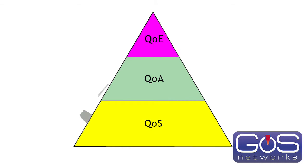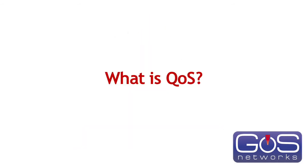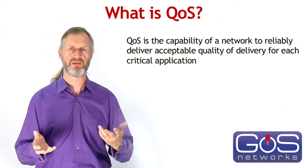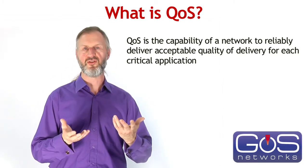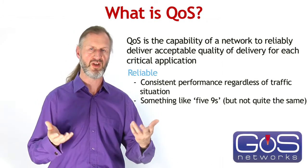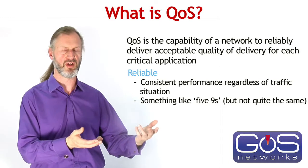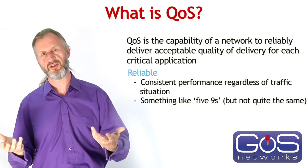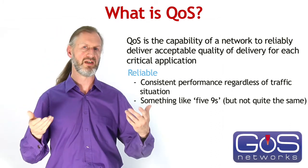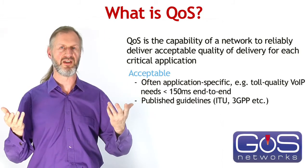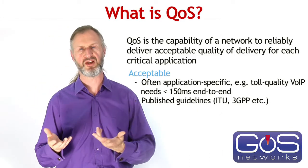So we could say quality of service supports quality of application, which supports in turn quality of experience, which is really the goal. Quality of service is the capability of a network to reliably deliver acceptable performance for each application. The problem is that we have multiple applications all using the network at the same time. Unlike the application layer where we can engineer each one separately, for the network we have to do them all together. Reliability here is something like the five nines we have in the telephony world, and acceptable is dependent on the application — it's not a one-size-fits-all solution. Each application has its own requirements.